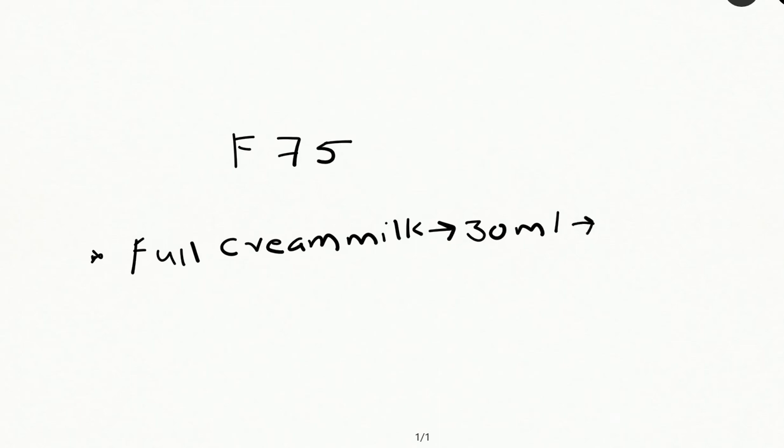30 ml of full cream milk will have 5 grams of protein. Instead of liquid, if you have powder, then it's 5 grams, whereas it was 15 grams in F100.